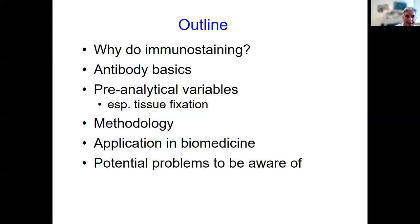We'll go into how antibodies work. Something that's very important is called a pre-analytical set of variables. These include procedures that happen prior to the staining itself and the readouts. In particular, the fixation of tissue samples can be critically important in getting optimal results, so we're going to spend some time on that. We'll also go over methodology, applications, and potential problems to be aware of when using this technique.